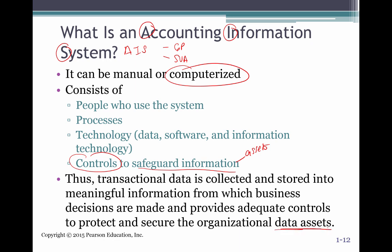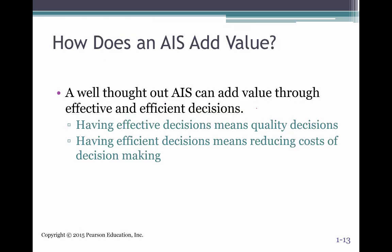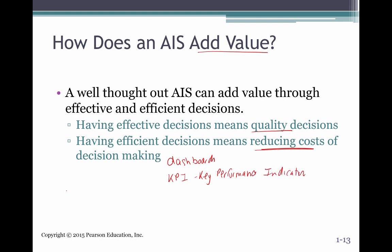So where does AIS add value? Why do companies spend thousands — if not millions — to implement an AIS using SAP, Oracle, or Great Plains? It gives you the ability to make quality decisions and reduce the cost of making decisions because reports are readily available. Dashboards are one area used quite heavily now — you get a snapshot of KPIs, key performance indicators, from the AIS system. We also now have big data — large quantities of data collected through social media and other internet activity — which we're being able to incorporate into our AIS system as well.